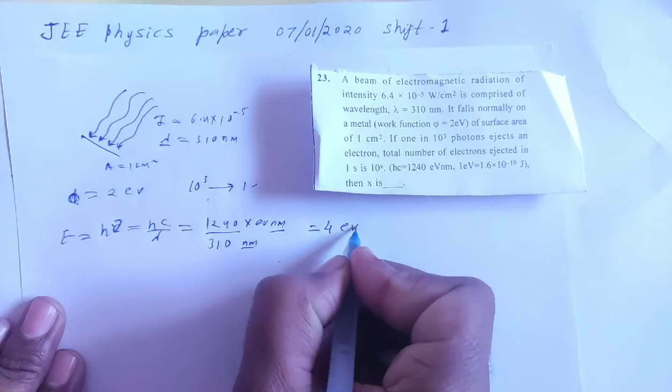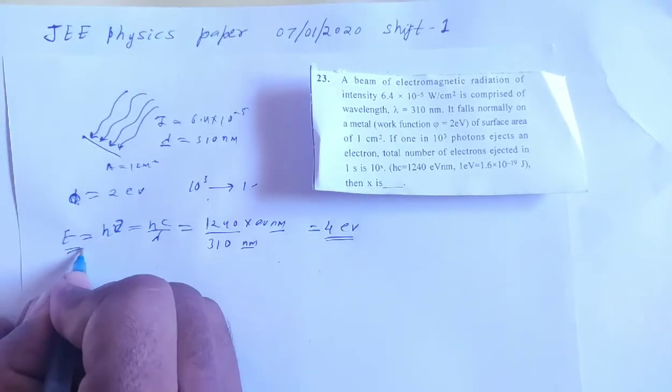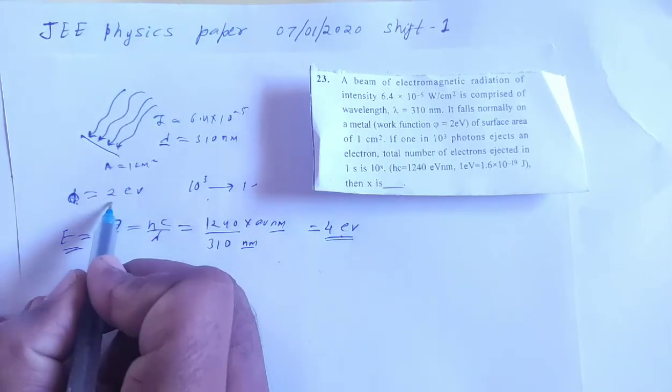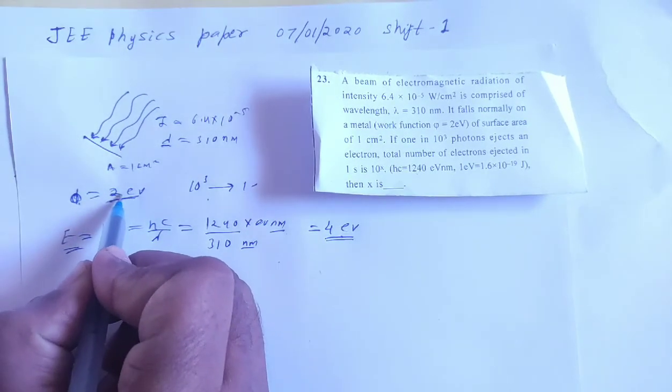Which is 4 electron volt. This will be the energy of the photon.